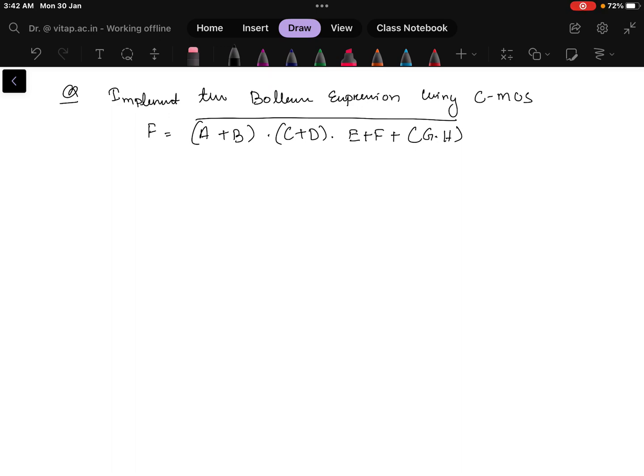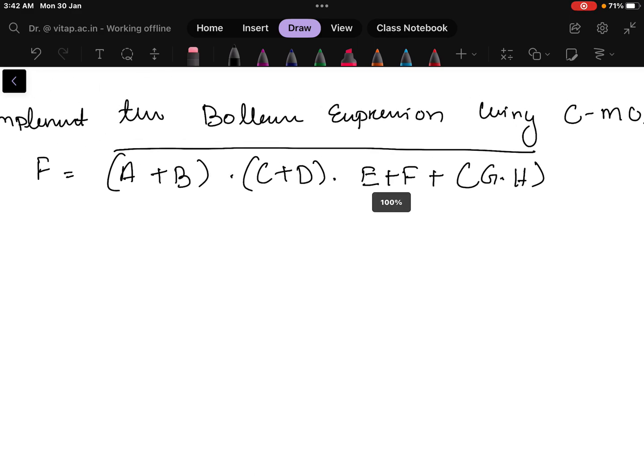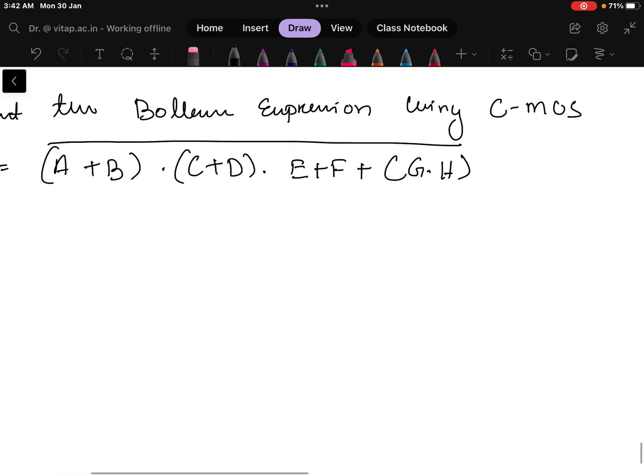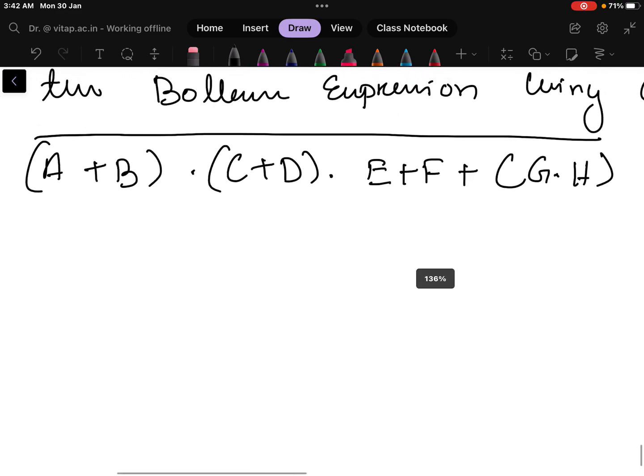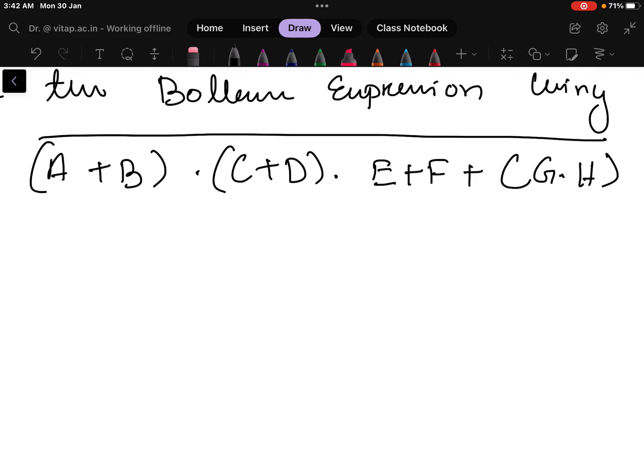In this video we will be solving this complex problem which is saying that implement the Boolean expression using CMOS. Just see the expression first then I will be going to draw the circuit.